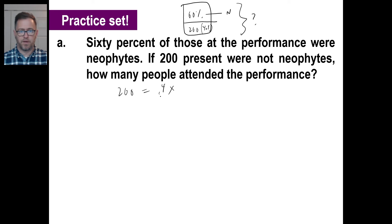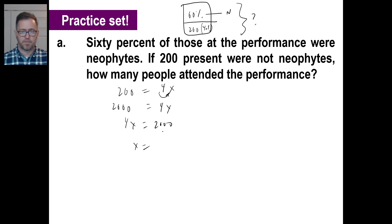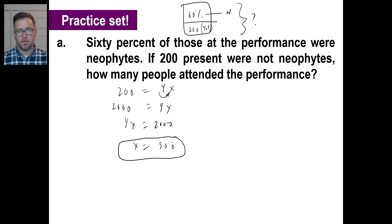200 is 40% of what? That's 0.4 times X. Moving things over: 4X = 2,000. Divide by 4 — 2,000 divided by 2 is 1,000, divided by 2 again is 500. The entire number of people at the performance was 500.